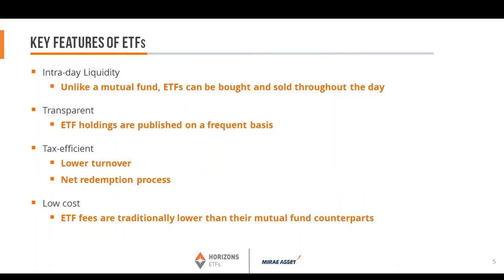Key features of ETFs: they offer intraday liquidity unlike a mutual fund — ETFs can be bought and sold throughout the day because of the market maker. ETFs are transparent — their holdings are published frequently. Many ETFs track an index such as the S&P 500 or TSX 60, so the constituents and weights are known. Even active ETFs and smart beta ETFs show portfolio holdings far more regularly than mutual funds, which show holdings on the last day of each six-month period but 90 days later. With an ETF, if it's an index you know exactly what the constituents are; for active ETFs transparency is typically monthly.